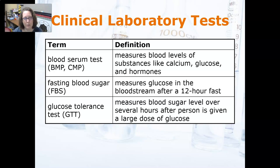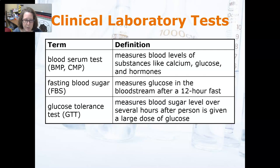You would be looking at a blood glucose greater than 126 milligrams per deciliter to determine if somebody has diabetes. If they are above that level while fasting, you can say confidently that they have diabetes. A Glucose Tolerance Test, sometimes also known as an Oral Glucose Tolerance Test, measures blood sugar levels over several hours after a person is given a large dose of glucose.